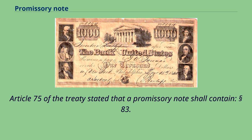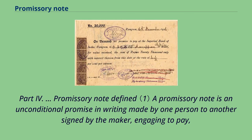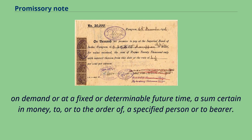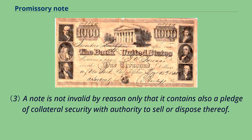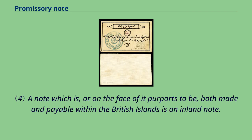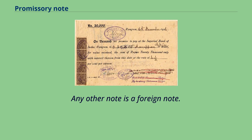Article 75 of the Treaty stated that a promissory note shall contain the elements defined in Section 83 of the Bills of Exchange Act 1882, Part 4, which defined a promissory note as an unconditional promise in writing made by one person to another, signed by the maker, engaging to pay on demand or at a fixed or determinable future time a sum certain in money, to or to the order of a specified person or to bearer. An instrument in the form of a note payable to maker's order is not a note within the meaning of this section unless and until it is endorsed by the maker. A note is not invalid by reason only that it contains also a pledge of collateral security with authority to sell or dispose thereof. A note which is, or on the face of it purports to be, both made and payable within the British Islands is an inland note; any other note is a foreign note.